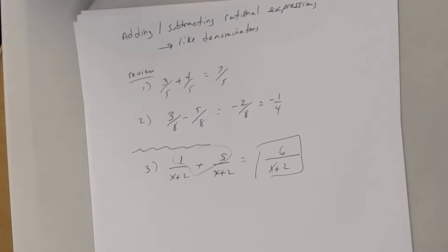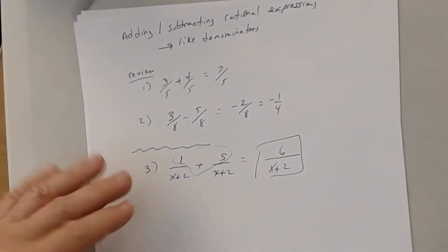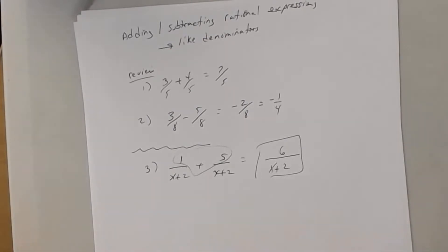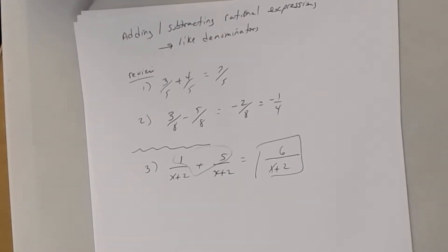I have one partition of x plus 2, and five partitions of x plus 2. Altogether, how many x plus 2 partitions do I have? Six of them. So, 6 divided by x plus 2.